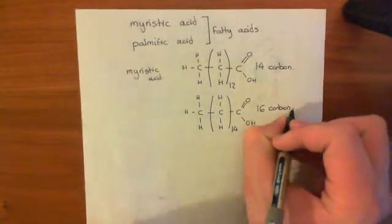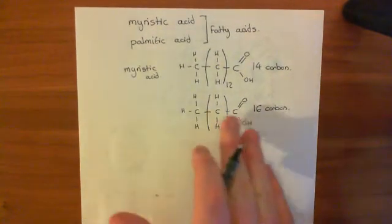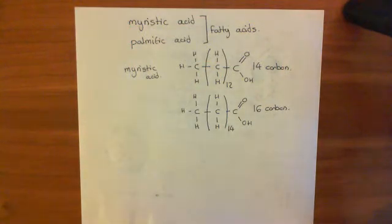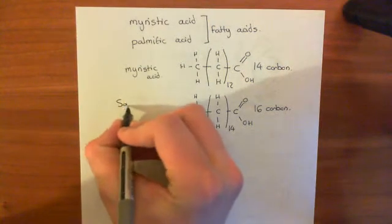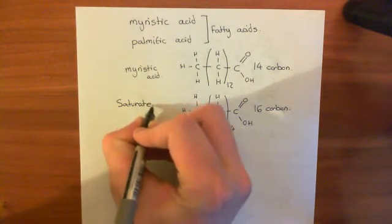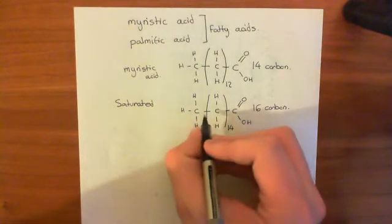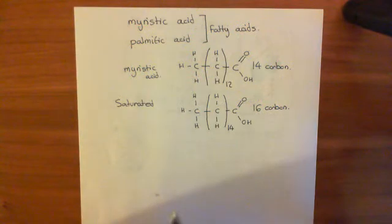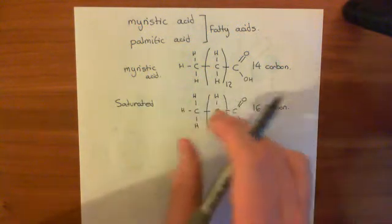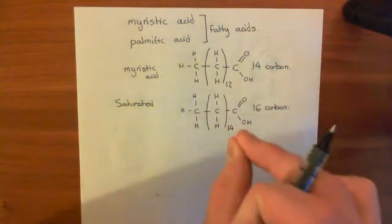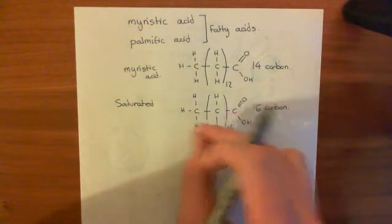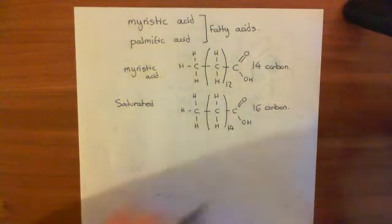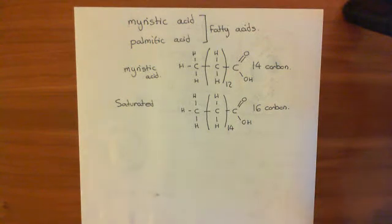So these are two carboxylic acids that have a very long tail, and the tail is completely saturated. Saturated means there is not a single double bond between any of these carbons — they are all singly bonded. It means the amount of hydrogen this molecule has is the utter maximum it could possibly have. You cannot add another hydrogen onto this structure; that's why it's said to be saturated.